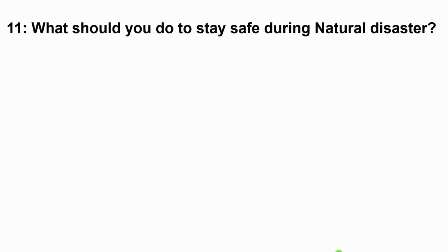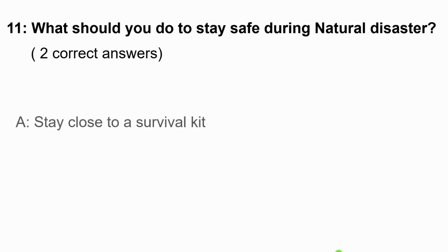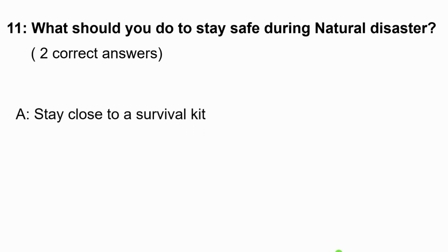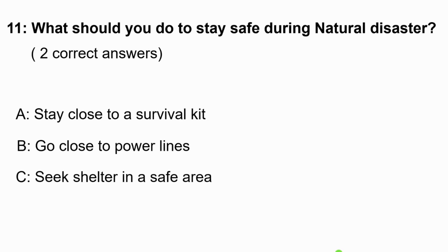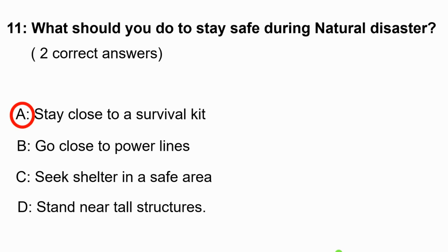Question 11: What should you do to stay safe during a natural disaster? Choose two correct answers. Option A, stay close to a survival kit. Option B, go close to fault lines. Option C, seek shelter in a safer area. Option D, stand near the structure. The correct answers are: stay close to a survival kit and seek shelter in a safe area.